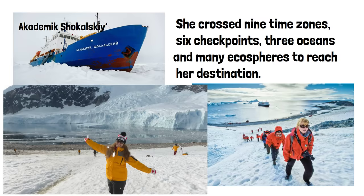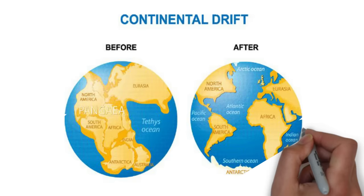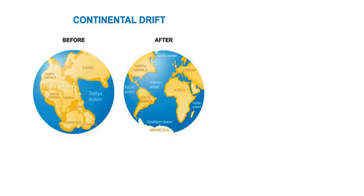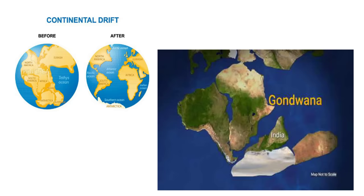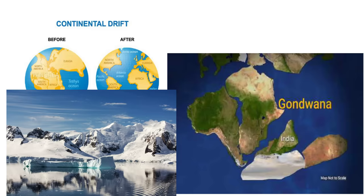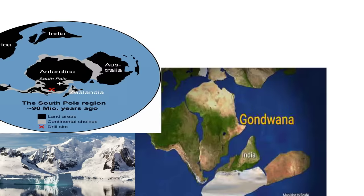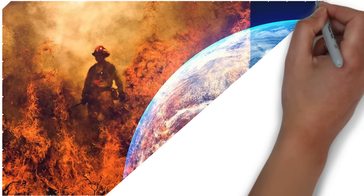Antarctica was part of a supercontinent called Gondwana 650 million years ago. At that time, humans were not present. It had a variety of flora and fauna, including dinosaurs. Later, humans appeared and caused deforestation, global warming, air pollution, water pollution, and other pollutions.